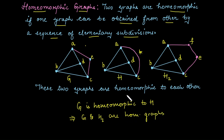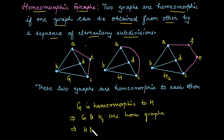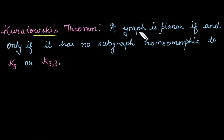Now, whether H and H2 are homeomorphic — the answer is yes. We need two subdivisions: first take vertex E to convert the single edge into two edges, then take vertex F to convert edge AE into two edges A to F and F to E. So from H we can obtain graph H2 by performing two subdivisions. Therefore, H and H2 are also homeomorphic, and in short, all three graphs G, H, and H2 are homeomorphic to each other.